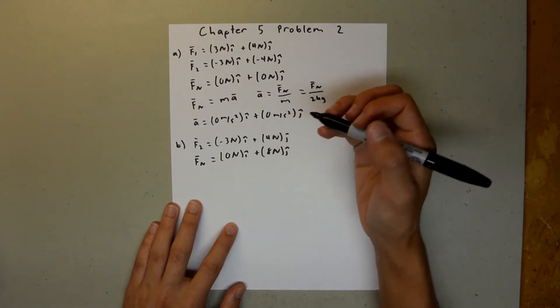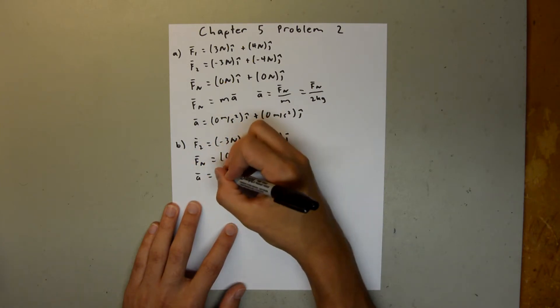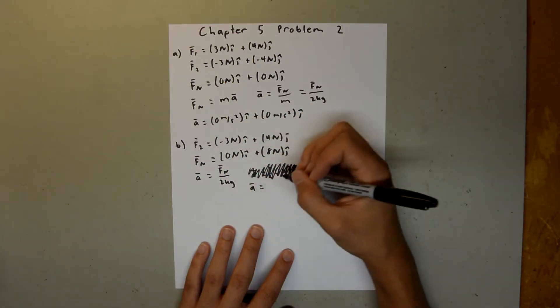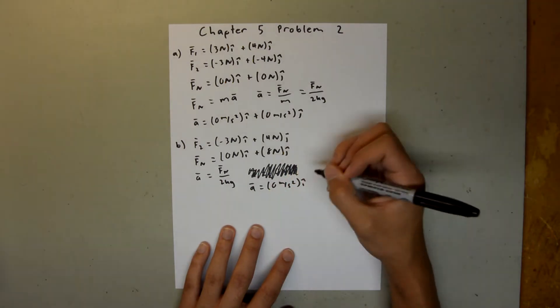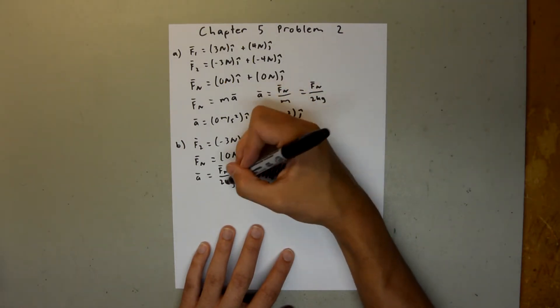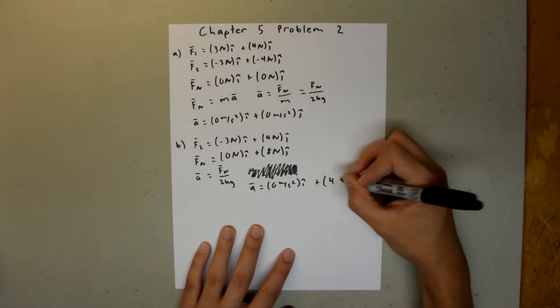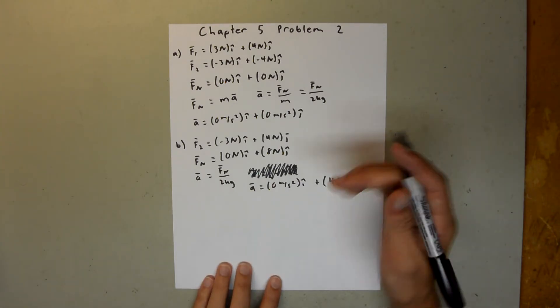And we can use the equation we derived up here, so we have a is equal to fn over 2 kilograms. So, our a is going to be equal to 0 meters per second squared i-hat, because we have 0 divided by 2, and this time we have 8 divided by 2. So, this is going to be plus 4 meters per second squared j-hat.